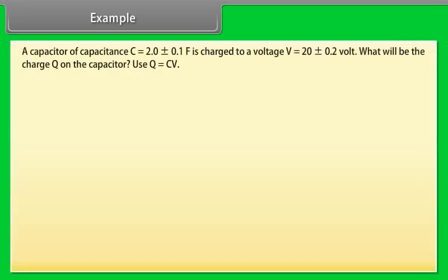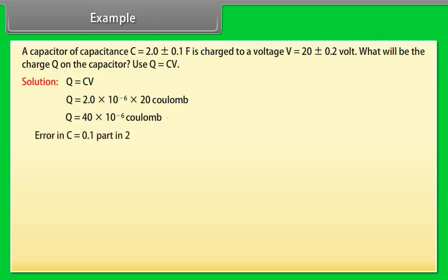Example. Let's take an example of errors. A capacitor of capacitance C is equal to 2.0 plus minus 0.1 microfarad is charged to a voltage V is equal to 20 plus minus 0.2 volt. What will be the charge Q on the capacitor? Use Q is equal to CV. Let us see the solution. Q is equal to CV. On calculating we get Q is equal to 40 into 10 to the power minus 6 coulomb.